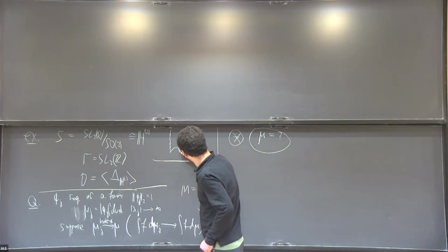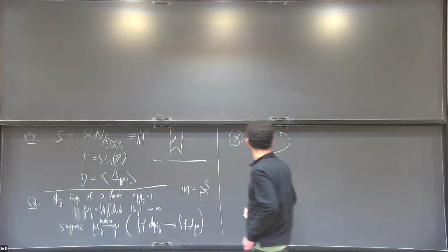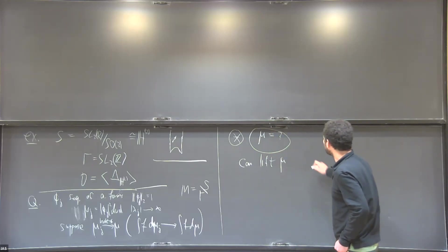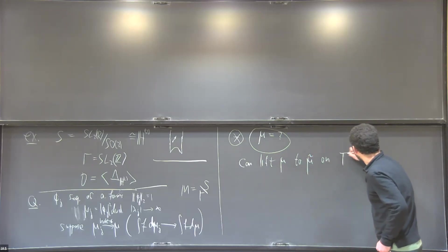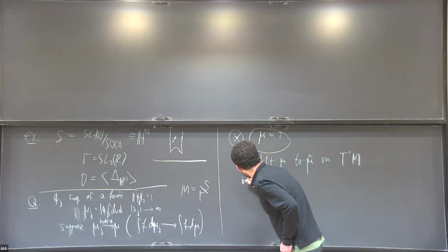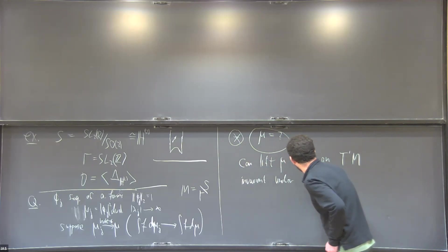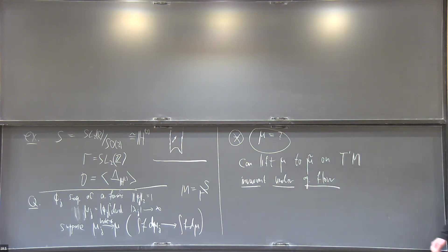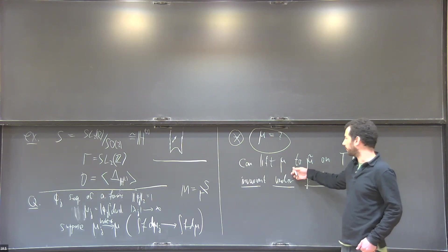You take a point and a direction, and start following the geodesic in this direction. One can lift the measure mu to a measure on the unit tangent bundle, and the important property is that this measure is invariant under the geodesic flow. This is a very important property and result originally due to Snirelman in the 70s. You see that this already puts significant restrictions.